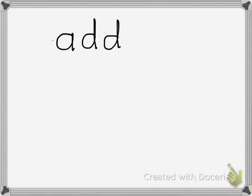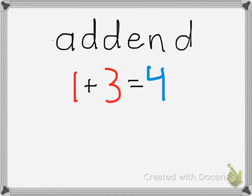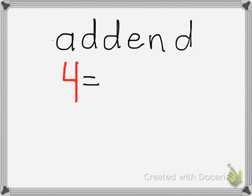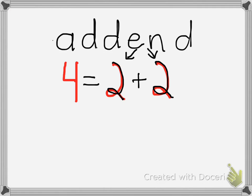But first, let's review what an addend is. Let's look at the number sentence: 1 plus 3 is equal to 4. In this number sentence, the addends are 1 and 3 — those are the two numbers we are adding together to get 4. Now the next number sentence is 4 equals 2 plus 2. What are the addends? That's right — the addends are 2 and 2, because those are the two numbers we are adding together. Great, now you know what an addend is.